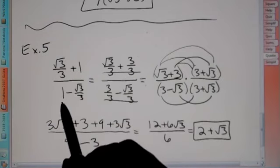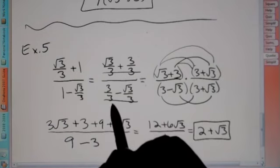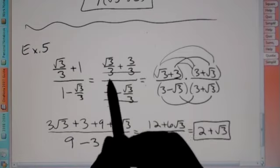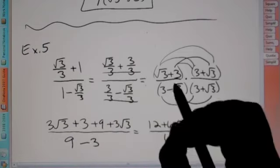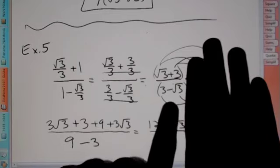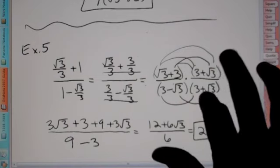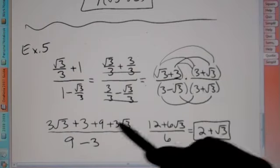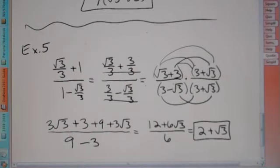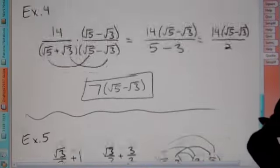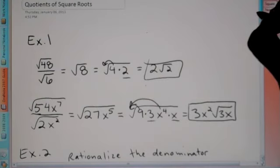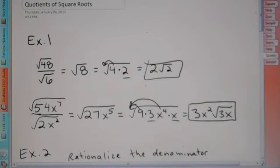We can reduce: 12 divided by 6 is 2, and 6 divided by 6 is 1, giving us 2 plus root 3. So find a common denominator on top and bottom, cross those out, multiply by the conjugate, FOIL on top, use first and last on bottom, then combine like terms and reduce. This is how we deal with quotients of square roots. Good luck, keep watching the videos as many times as you need, and ask questions at school if you have more.